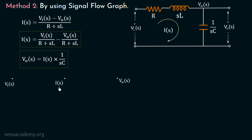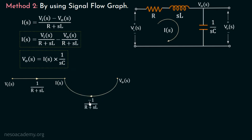Observing the branch current equation — I(S) equal to Vi(S) over R plus SL minus Vout(S) over R plus SL — this equation relates the node I(S) with the nodes Vi(S) and Vout(S). We can see that I(S) equals Vi(S) multiplied with 1 over R plus SL, plus Vout(S) multiplied with minus 1 over R plus SL. Moving to the second equation, Vout(S) equals I(S) multiplied with 1 over SC, which relates the nodes I(S) and Vout(S). This completes the signal flow graph of this electrical network.